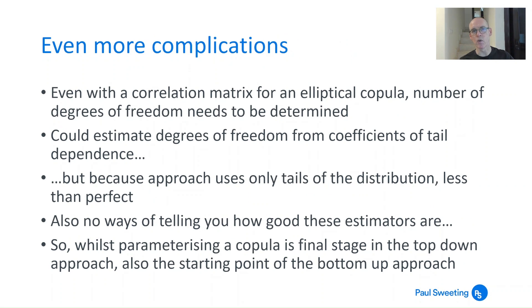Even when you do have a correlation matrix for elliptical copula, you've still got to determine the number of degrees of freedom. You could estimate the degrees of freedom from the coefficients of tail dependence. If you remember that formula we looked at before, there was a number in there for the degrees of freedom in your t copula. And you could try to tweak that to make sure that it came up with a number for tail dependence, which was consistent with what the data showed. This would work. It's slightly suspect because you're only using the tails of the distribution. So what this essentially means is that whilst parameterising a copula is the final stage in the top-down approach, it's also often best used as the starting point for a bottom-up approach. And it also means that maybe method of moments isn't the best way of dealing with this.